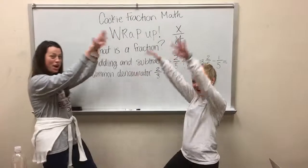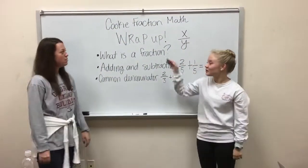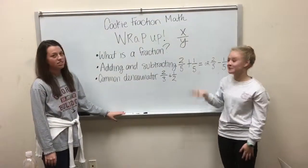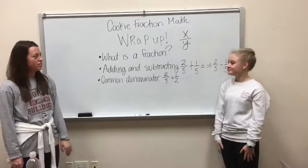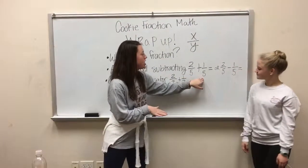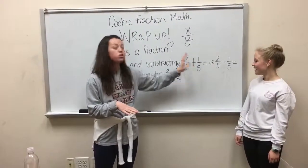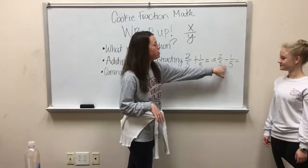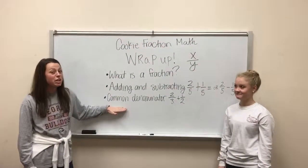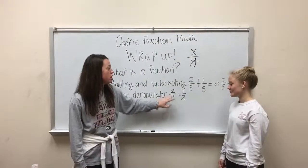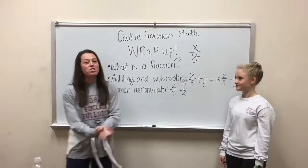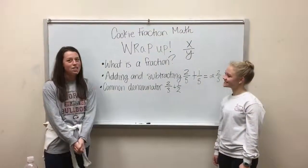It's time for a wrap-up! Let's go over what we learned. We learned what a fraction is — it is a part out of a whole. The top number is called the numerator, and the bottom number is called the denominator. We also learned about adding and subtracting fractions. If you have the same number on the bottom, you can add or subtract straight across: two-fifths plus one-fifth equals three-fifths, and two-fifths minus one-fifth equals one-fifth. If you have different numbers on the bottom, you have to find a common denominator by multiplying each fraction by the denominator of the other. For example, multiply two-thirds by two over two and one-half by three over three to get a common denominator of six. That's everything we learned today for cookie fraction math — we hope you enjoyed it!